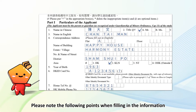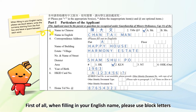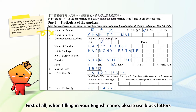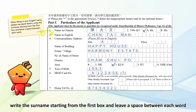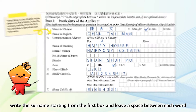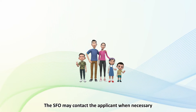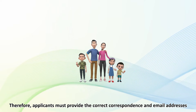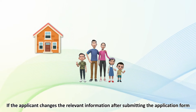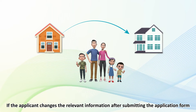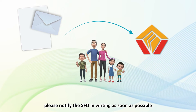Please note the following points when filling in the information. When filling in your English name, please use block letters. Write the surname starting from the first box and leave a space between each word. The SFO may contact the applicant when necessary. Therefore, applicants must provide the correct correspondence and email addresses. If the applicant changes the relevant information after submitting the application form, please notify the SFO in writing as soon as possible.